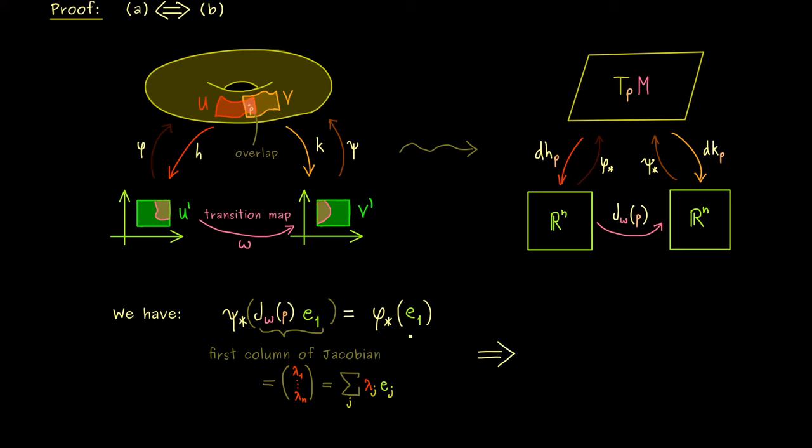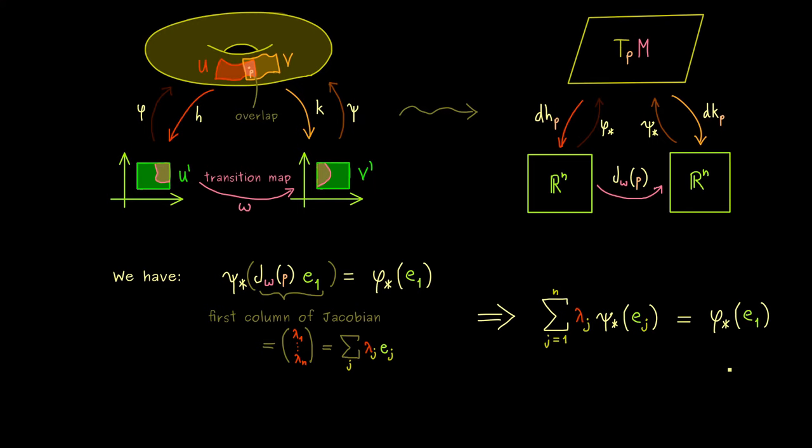Indeed, please don't forget, after the star maps here, we work in the tangent space. So what we have here is that a linear combination of tangent vectors is equal to one tangent vector on the right. Moreover, we know by definition, that these tangent vectors here come from the coordinate basis. Namely, the one on the right is the first basis vector with respect to the chart h.